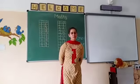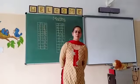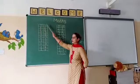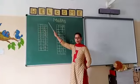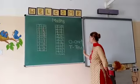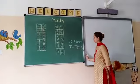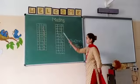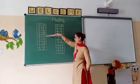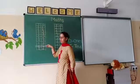Hello students, today we will learn numbers. T.O. — What is T.O.? O means 1's, T means 10's. This is the 1's column and this is the 10's column.